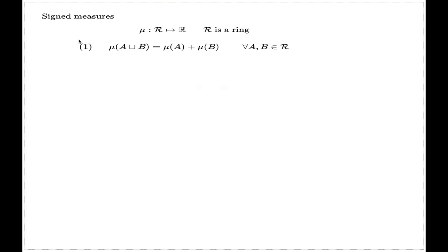That's what we call signed measures, but most of the time we will consider sigma additive signed measures. A measure is sigma additive when you have the sigma additivity identity for any sequence A_n from your ring, and we require that the disjoint union is also in the ring, because a ring is not necessarily a sigma ring. In this identity, the right-hand side is an absolutely converging numerical series, and the result of this convergence equals the left-hand side. That's how you read this identity.